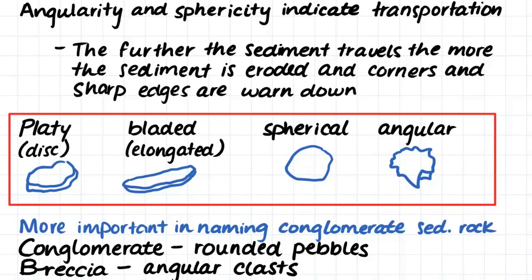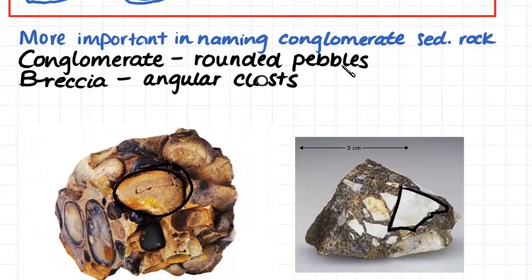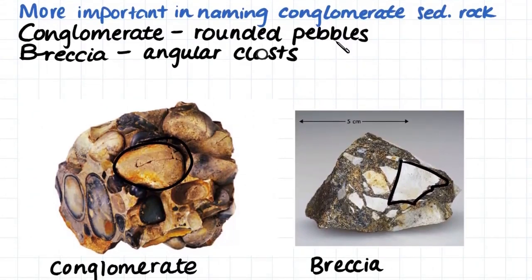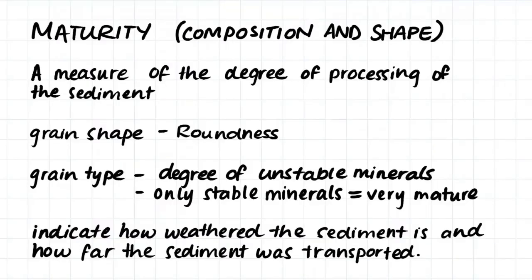These grain shapes and sizes are quite important when we're naming conglomerate sedimentary rock — sedimentary rock with a lot of gravel sized grains. In sedimentary rock where the grains are smaller than gravel sized, it is quite hard to distinguish whether the grains are platy, bladed, spherical, or angular, so we only really look at these names when considering conglomerate sedimentary rock. Conglomerate sedimentary rock that has rounded pebbles is called a conglomerate, whereas conglomerate sedimentary rock that has angular clasts is actually called breccia. Here we have an example of a conglomerate and a breccia. One thing we look at when considering sedimentary rock is the maturity of the sediment. We can look at the maturity by considering the composition of the clasts and the shape of the clasts.